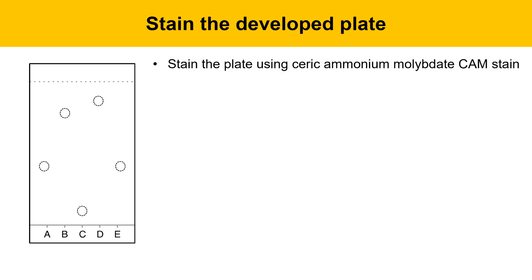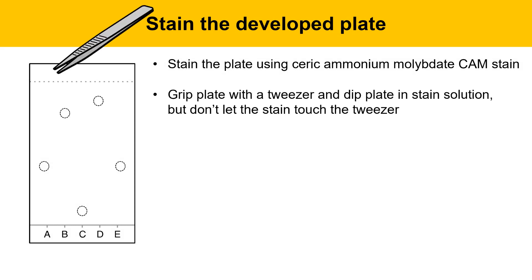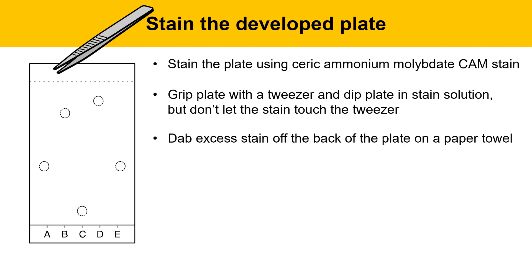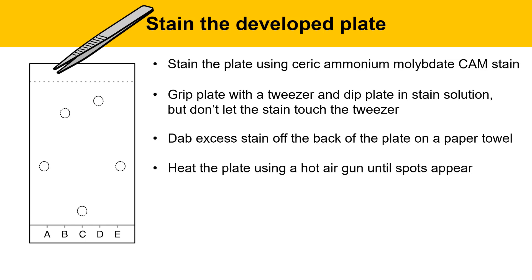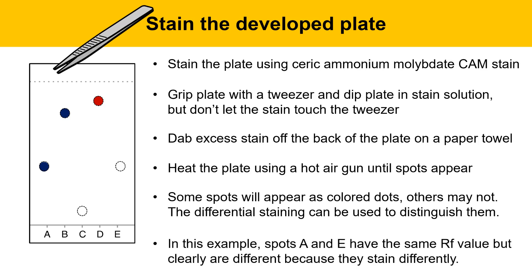Next, we'll stain the developed plate using a ceric ammonium molybdate, or CAM stain. This can be useful for distinguishing spot types, as some spots stain differently. It's particularly useful when RF values are very close — for example, if the top two spots have a very similar RF value, different staining helps distinguish them. Grip the plate with tweezers and dip it in the stain solution, but don't let the stain touch the tweezers — only dip up to the dotted line, because touching the tweezers can catalyze a reaction that turns the entire plate blue. Dab excess stain off the back with a paper towel, then heat the plate with a hot air gun until spots appear. Some spots turn blue, another may turn a rusty red-brown color. This differential staining can be used to distinguish them — spots A and E having the same RF value but different staining colors confirms they are different compounds.